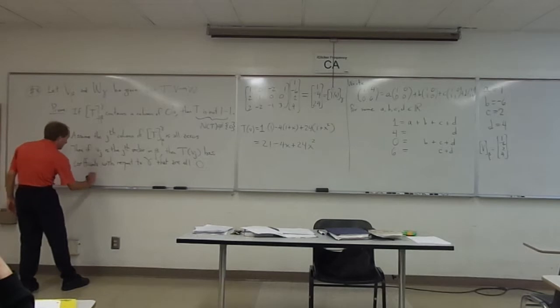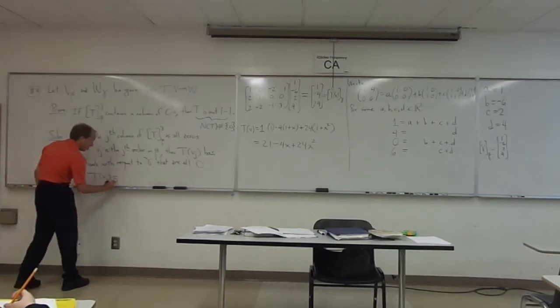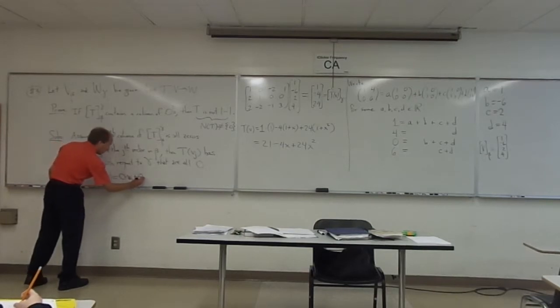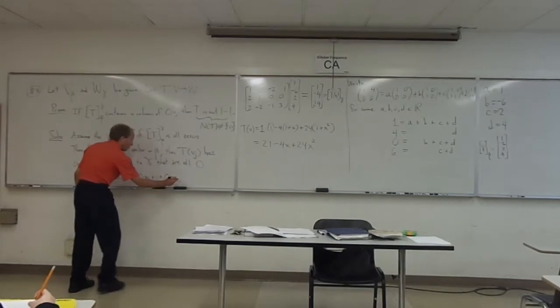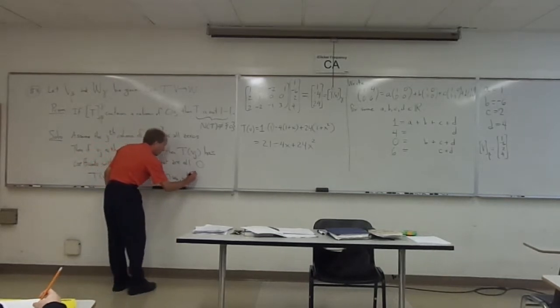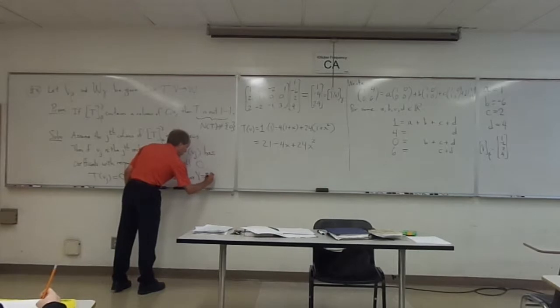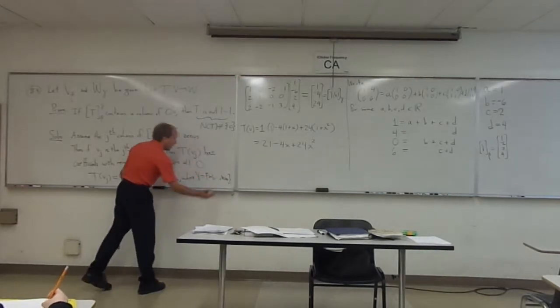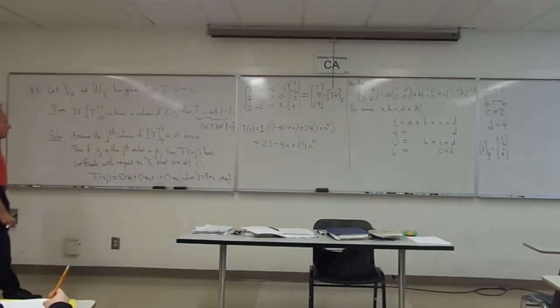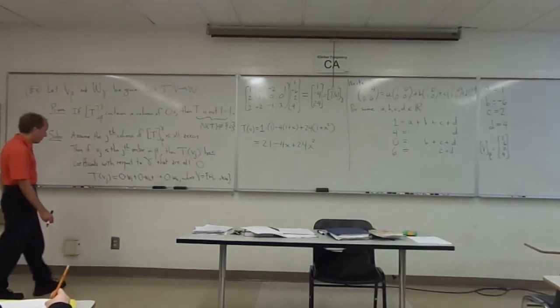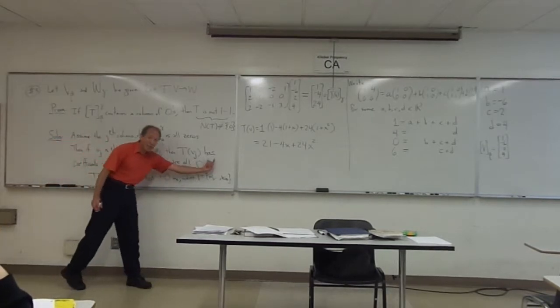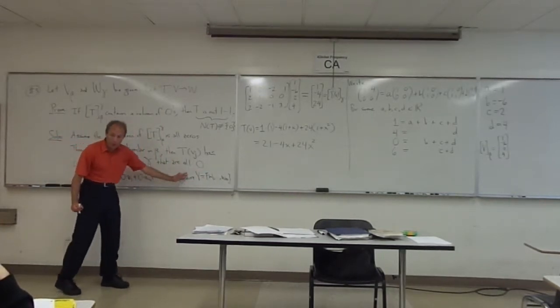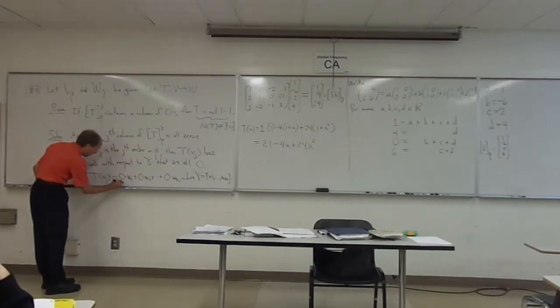But the idea is that T of v_j, if I just want to even put an equation down, is like zero times w_1 plus zero times w_2 plus da-da-da-da plus zero times w_m, where, I'll just say that here, gamma is w_1 through w_m, like that. So if I just define it that way, then, so it doesn't even matter what these vectors actually are. The point is they're all getting multiplied by zero and added together, so my final answer is zero.